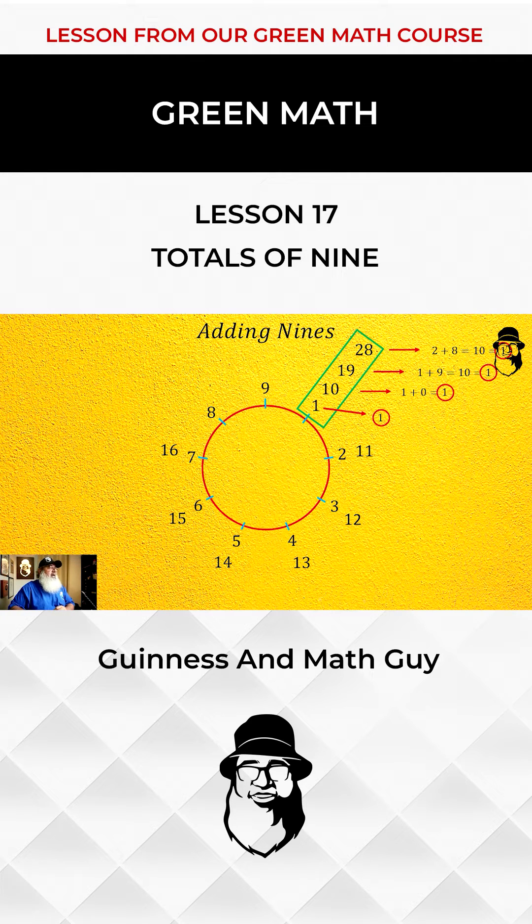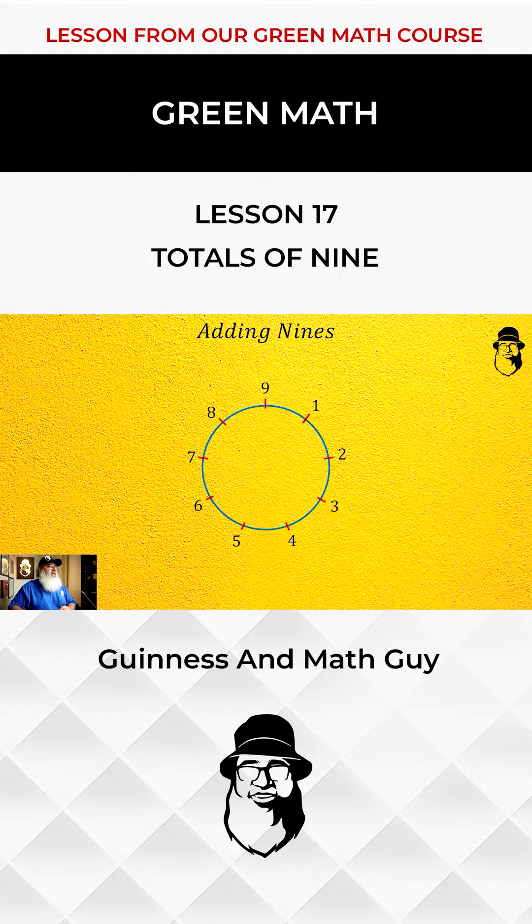This will happen for any branch. The digit sum of all the numbers on that branch are the same. So on the 7 branch, for example, all the numbers there will have a digit sum of 7, and so on.